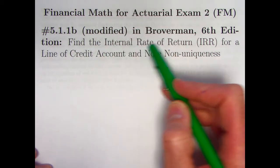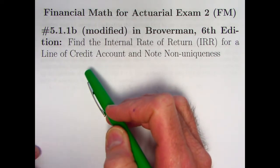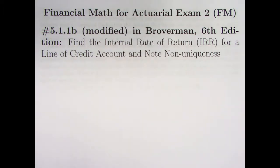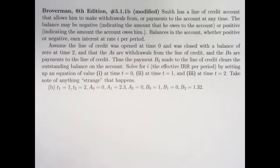We're going to be finding the internal rate of return, IRR, for a line of credit account. And we're going to note something strange that's going to happen. We're going to note that the internal rate of return is actually not unique in this situation, which then begs the question, when might it be unique and what kinds of situations would lead to uniqueness? But that does not happen here.